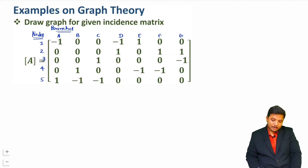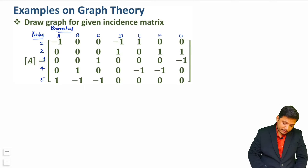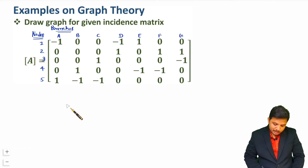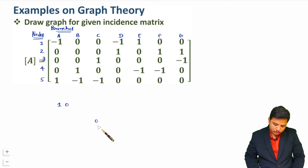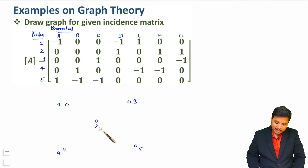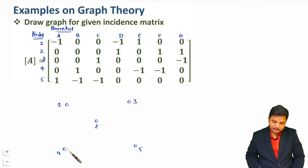Whenever you want to plot a graph, first of all locate the position of nodes. I am just keeping my nodes randomly — node 1 is there, at the center I am considering node 2, over here node 3, here node 4, and here node 5. It is not compulsory that you place the location of nodes exactly as written. You can consider it randomly.